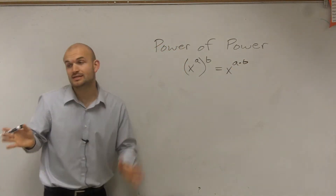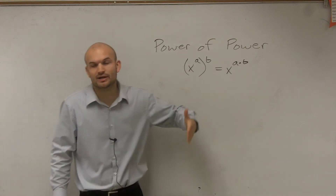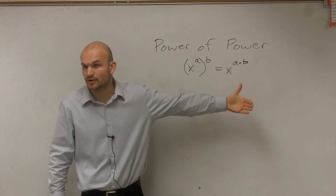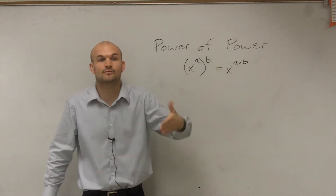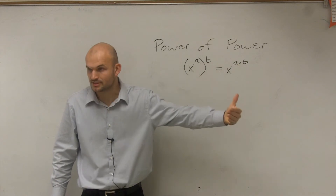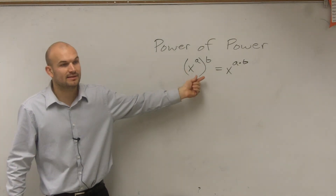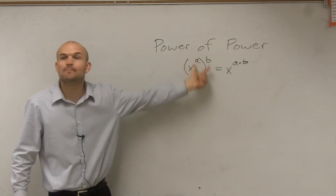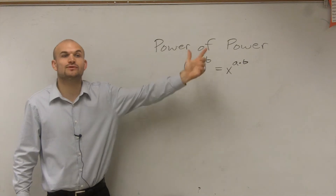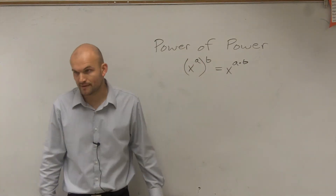This gets a lot of students confused because they always want to confuse this with the product rule. Because remember, the product rule stated we add exponents — and that was when you're multiplying the bases. But now when we take a power raised to another power, we're going to multiply them.